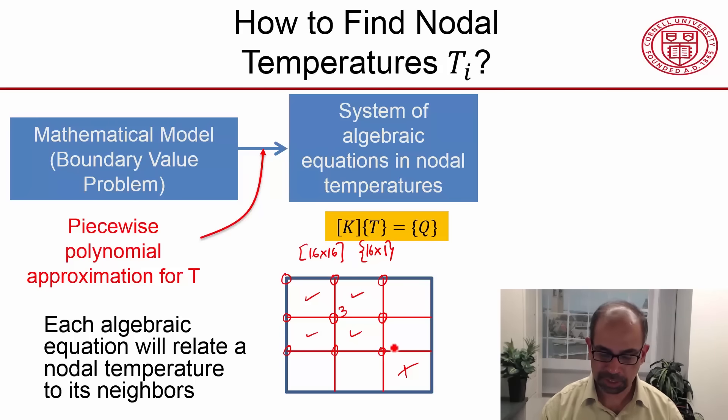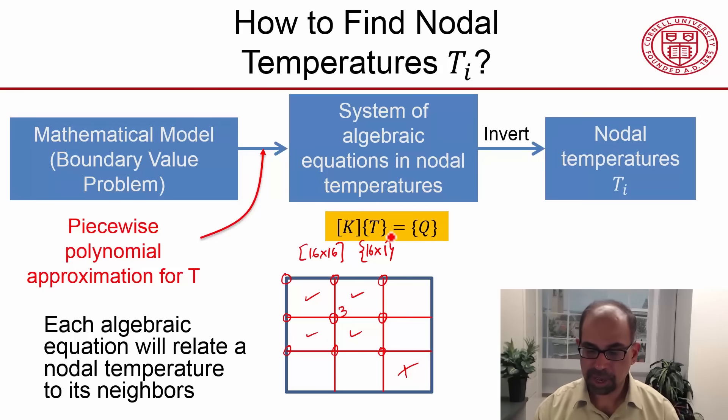And similarly, you can think about what's the dimension of Q. It will invert that—so that's a matrix inversion problem—and determine the nodal temperatures. So you'll have the 16 nodal temperatures.